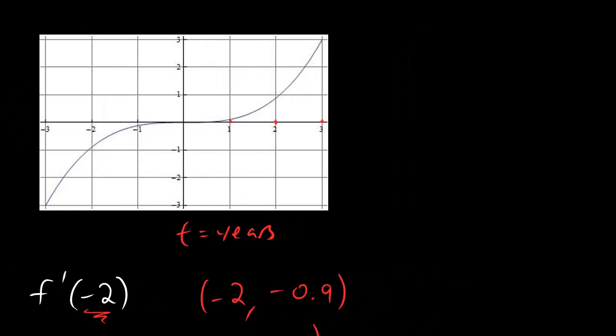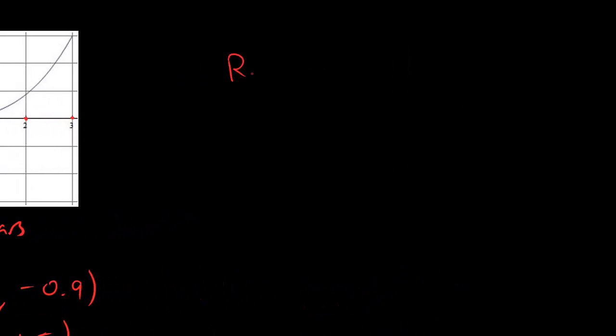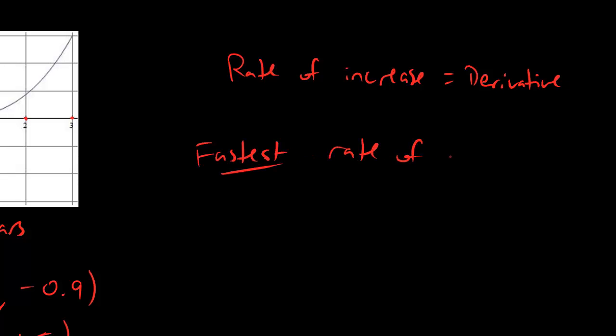The first thing that we want to make sure we know is, let me go over here, rate of increase just means derivative. And when the rate of increase is the fastest, fastest rate of increase, all that means is biggest derivative. Okay, cool, because check it out dudes, rate of increase means derivative. So the fastest rate of increase just means where is the derivative the biggest number.